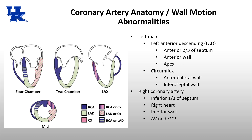The right coronary artery supplies the inferior third of the septum, the right side of the heart, the inferior wall of the left ventricle, and most often the AV node. There is an AV nodal artery that comes off the right coronary artery about 90% of the time and supplies the AV node. This is important to know because if you lose blood supply to the AV node, you can go into complete heart block.